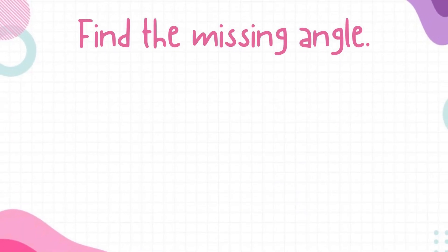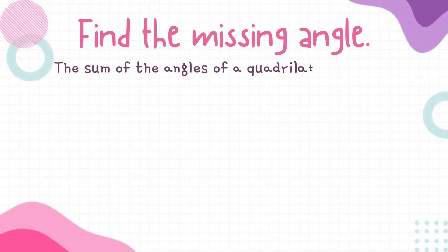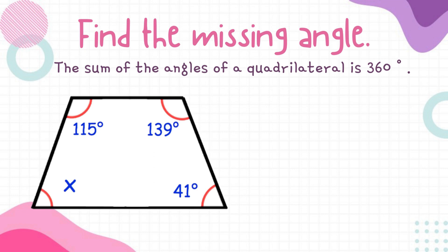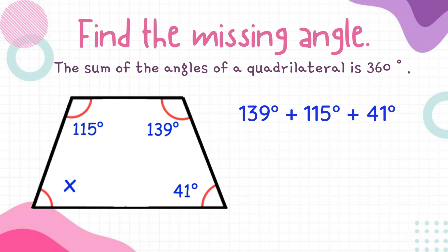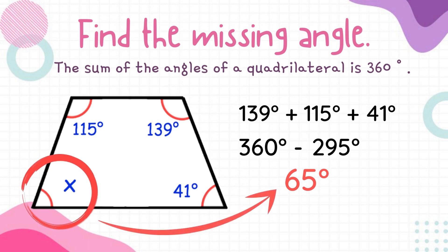How can we find the missing angles in a quadrilateral? Remember that all the angles in a quadrilateral add up to 360 degrees. Let's take a look at this example. Given three angles — 115, 139, and 41 degrees — what is the measurement of the fourth angle? To get the missing angle, first add the three given angles: 139 plus 115 plus 41 equals 295. Then subtract 295 from 360, and we get 65. The missing angle is 65 degrees.